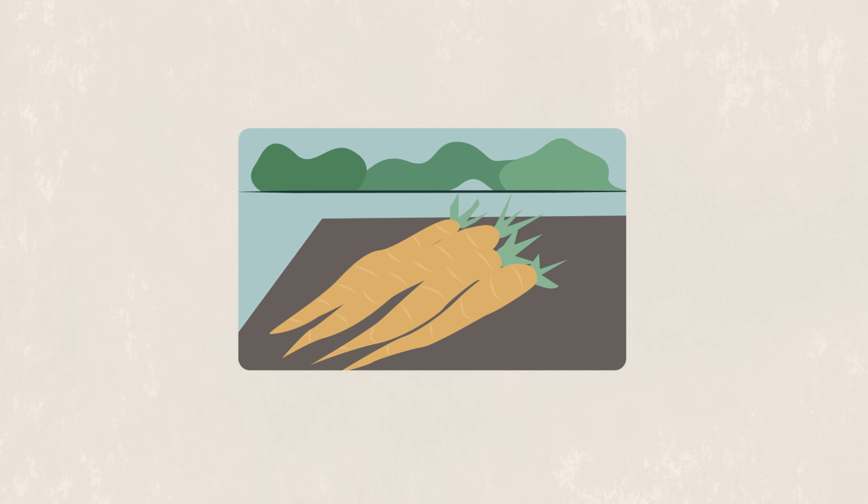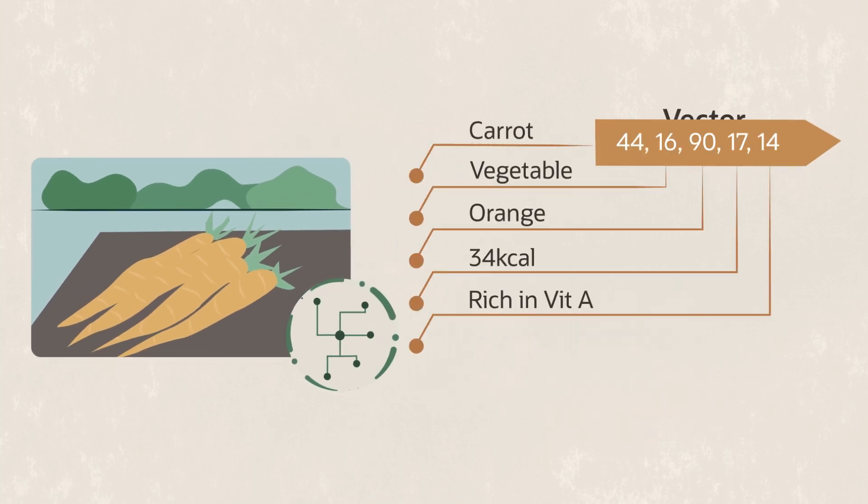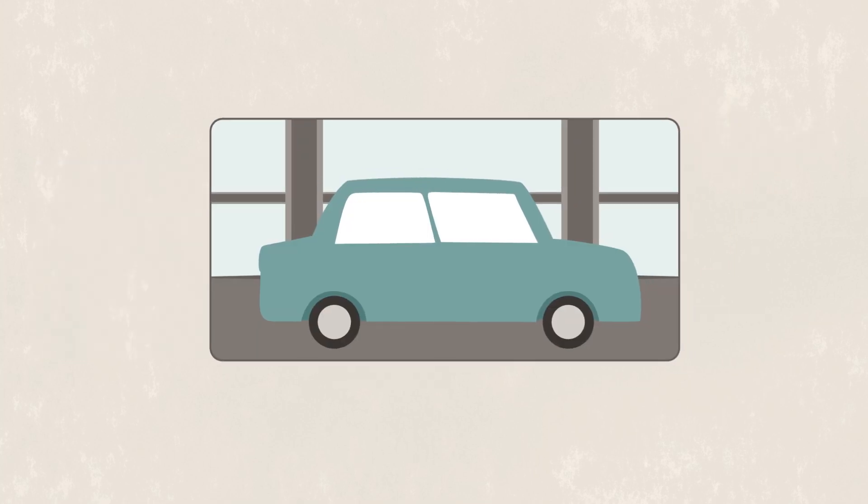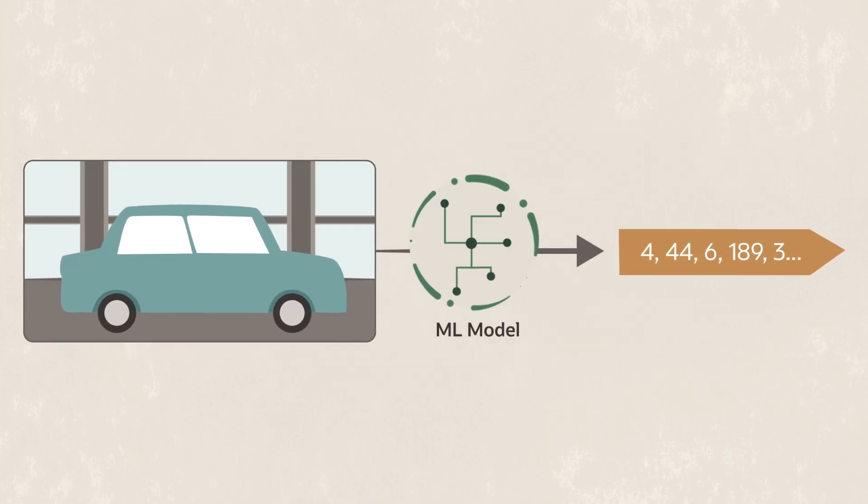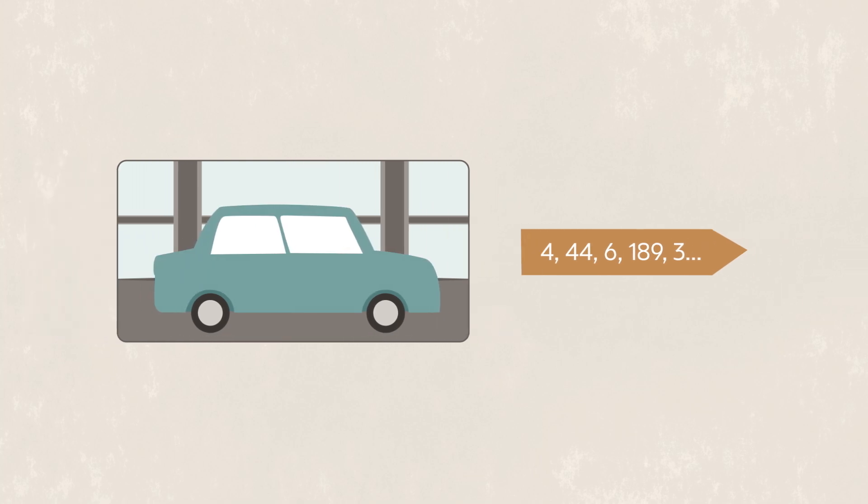An object's features are identified by sophisticated machine learning models and stored in a unique data type called a vector. An image file of a car, for example, will have numbers assigned that correspond to the car's features including the number of doors, size of tyres, style of roof, overall length and body colour and so on. The string of numbers is the image's vector embedding.